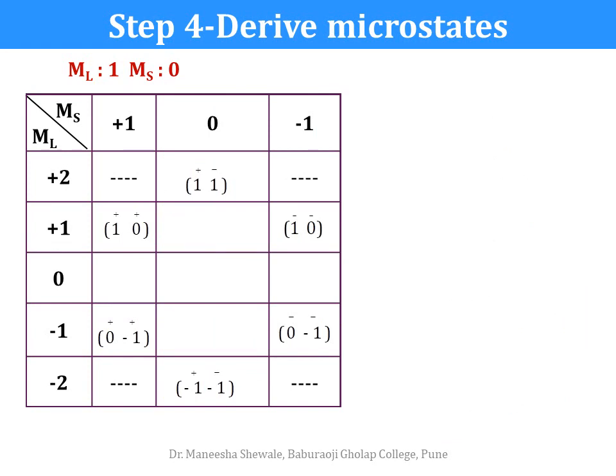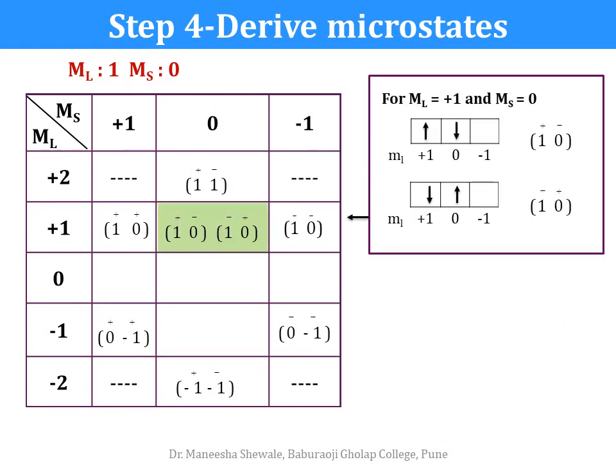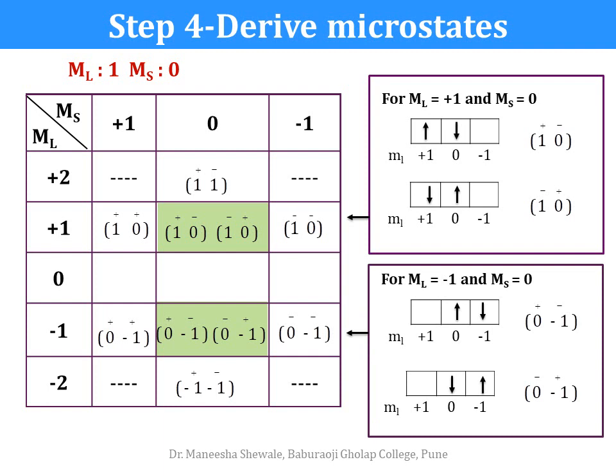For ML = plus 1 and MS = 0, we can write down two microstates: (1+, 0−) and (1−, 0+). For ML = minus 1 and MS = 0, the microstates will be (0+, −1−) and (0−, −1+). For ML = 0 and MS = plus 1, the microstate will be (1+, −1+), and for MS = minus 1 it will be (1−, −1−).